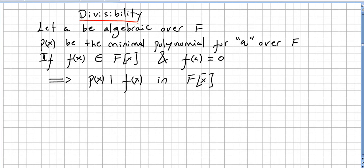I'll introduce our last concept of divisibility. Let a be algebraic over F and p(x) be the minimal polynomial for a over F. If f(x) is in the ring of polynomials and f(a) equals zero, that means that p(x) divides f(x) in this ring.